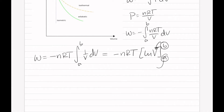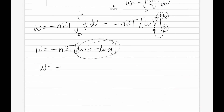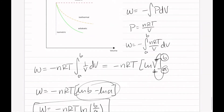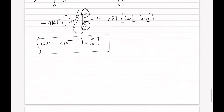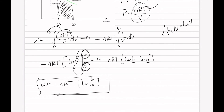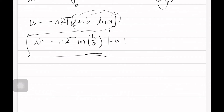Plugging in and subtracting, we get that work is equivalent to negative nRT times natural log of B minus natural log of A. Again, we can rearrange this into natural log of B over A. So your work becomes negative nRT times the natural log of B over A — and that is the work for an isothermal process. As you can see, this equation is exactly the same as the equation for the adiabatic process. Substituting in Vi and Vf, work equals negative nRT times the natural log of Vf over Vi.